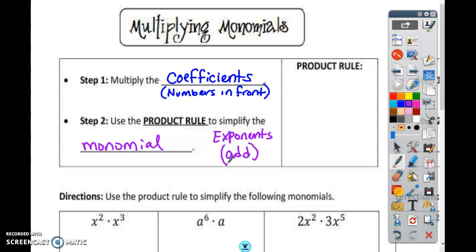So the product rule says, if you have m to the power of a times m to the power of b, all you do is add the a and the b. Whatever that number is, you add it to that number. So that would be m to the power of a plus b.